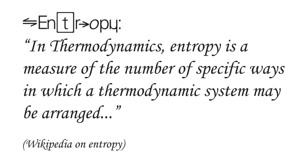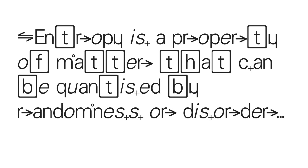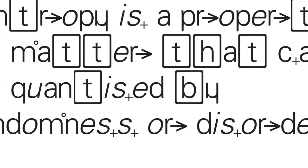What is entropy you ask? In thermodynamics, entropy is a measure of the number of specific ways in which a thermodynamic system may be arranged. In other words, entropy is a property of matter that can be quantified by randomness or disorder.